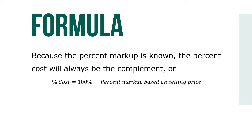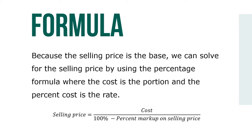Because the percent markup is known, the percent cost will always be the complement — percent cost equals 100% minus the percent markup based on selling price. Because the selling price is the base, we can solve for the selling price using the percentage formula where the cost is the portion and the percent cost is the rate. So: selling price equals cost divided by (100% minus percent markup on selling price).